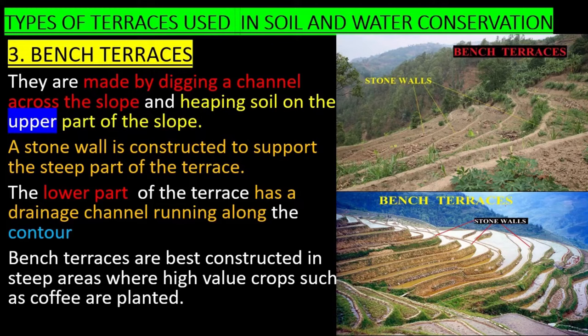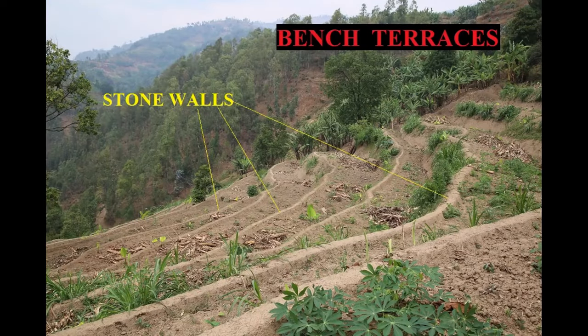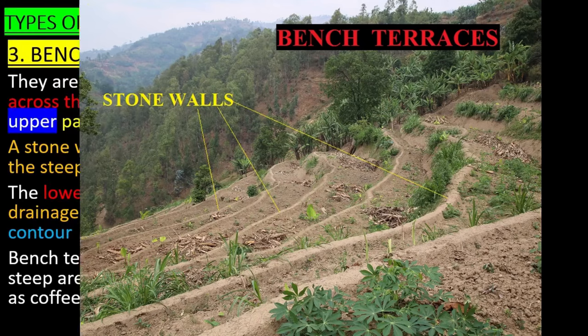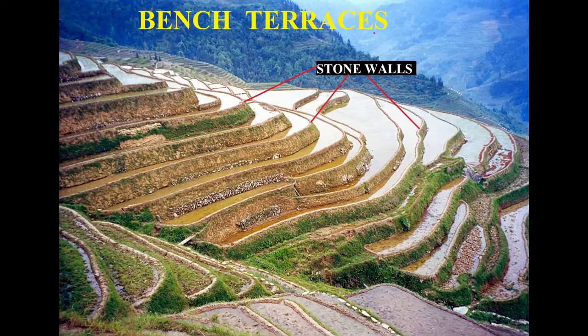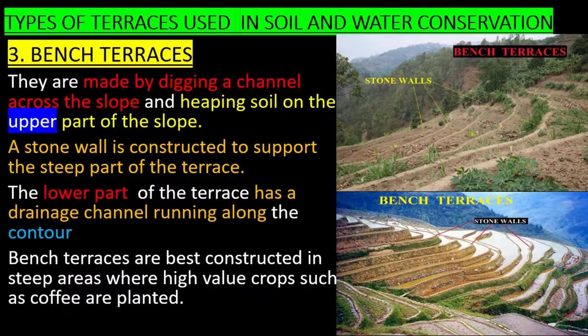Bench terraces are made by digging a channel across the slope and heaping soil on the upper part of the slope. A stone wall is constructed to support the steep part of the terrace. The lower part of the terrace has a drainage channel running along the contour. Bench terraces are best constructed in steep areas where high-value crops such as coffee are planted.